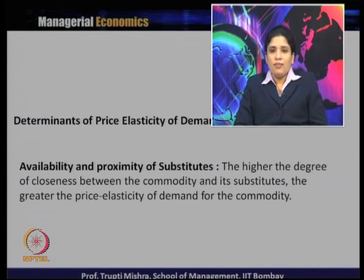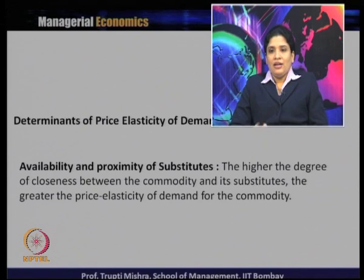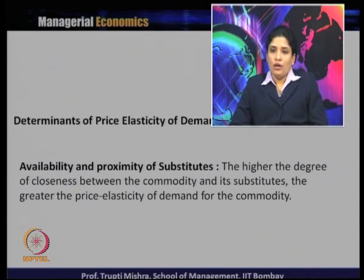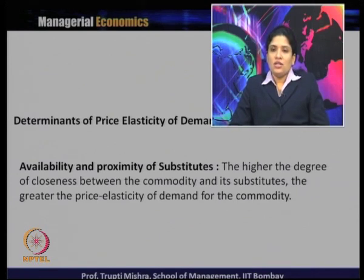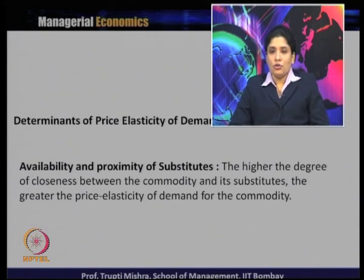The second determinant of price elasticity of demand is availability and proximity of substitutes. The higher the degree of closeness between a commodity and its substitute, the greater the price elasticity of demand for that commodity. For example, tea and coffee are close substitutes — if the price of tea rises, consumers are more sensitive and switch to coffee since it provides nearly the same utility.